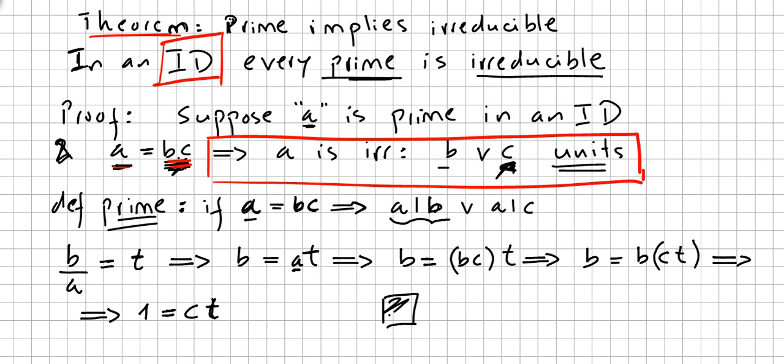If a is a prime number, that implies that a is irreducible. If a equals bc, so it implies that either a divides b or a divides c due to the fact that it is a prime. That's by hypothesis. And we just proved that if that happens, a is irreducible because we just proved that c is a invertible element or a unit. And that concludes the proof. So, in an integral domain, every prime is irreducible.